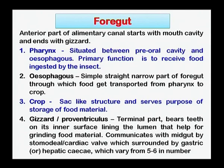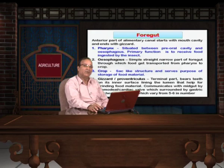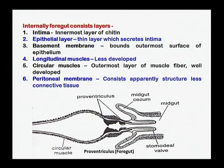The gizzard is attached to the midgut by a valve known as the cardiac valve or stomodial valve. Internally, the foregut consists of different layers: intima, which is the innermost layer of chitin; an epithelial layer; basement membrane; longitudinal muscles; circular muscles; and one important layer, the peritoneal membrane, which is almost a structureless layer.